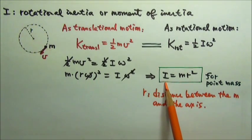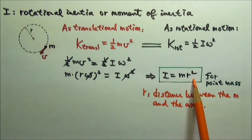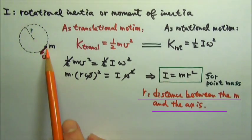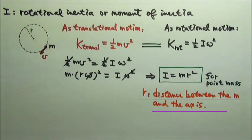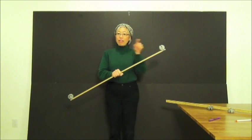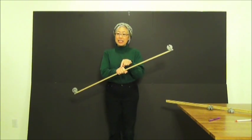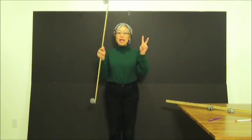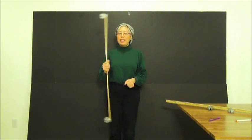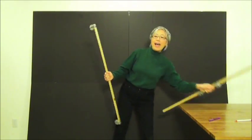The rotational inertia of a point mass is mr squared, where r is the distance between the mass and the rotational axis. So the farther away the mass is from the axis, the bigger the rotational inertia. Therefore, this one feels heavier to rotate than that one.